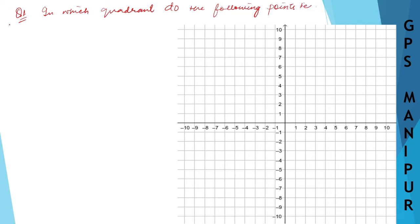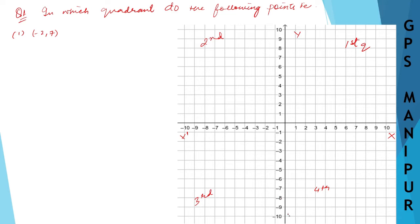Here is our graph. This is the first quadrant, this is the second quadrant, this is the third quadrant, and this is the fourth quadrant. This is the x-axis and this is the y-axis.